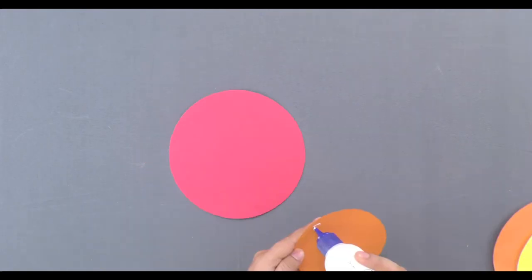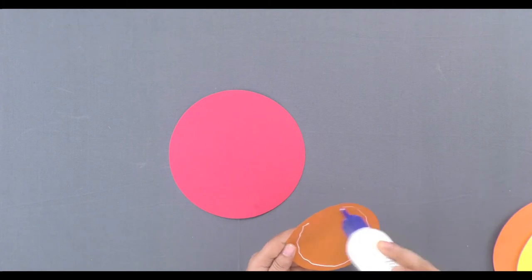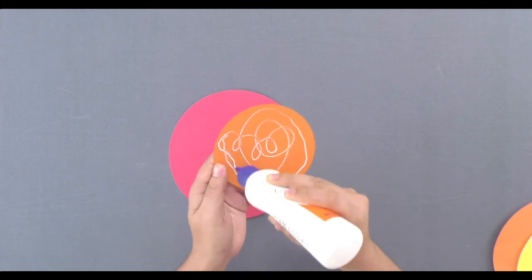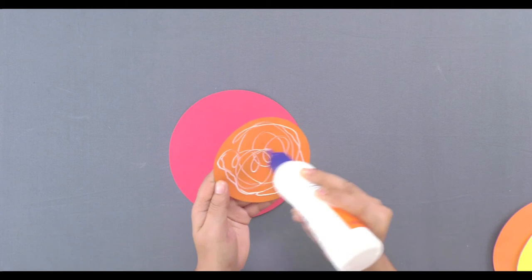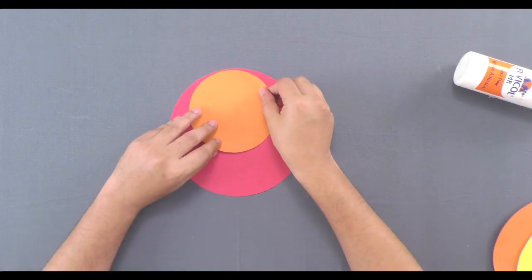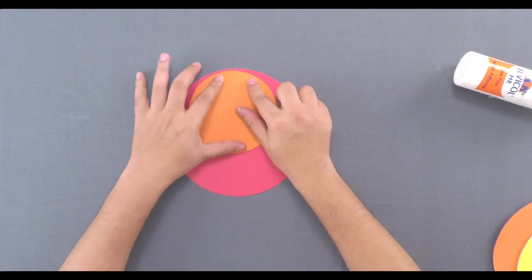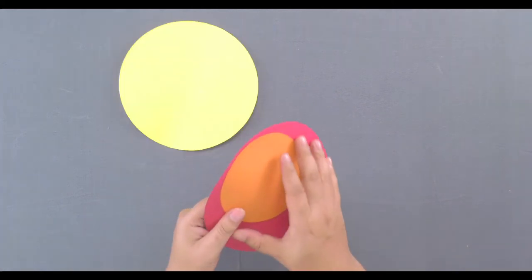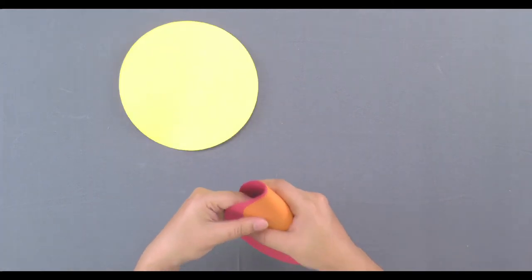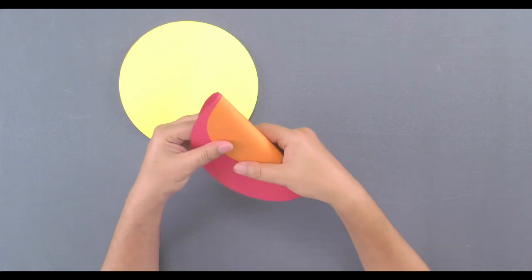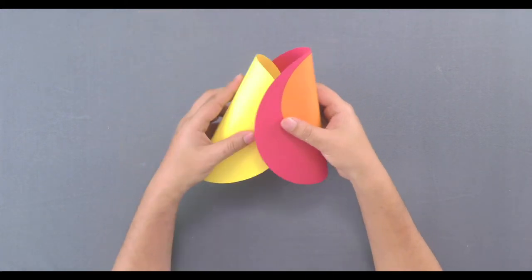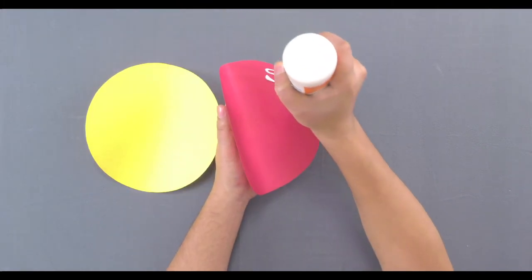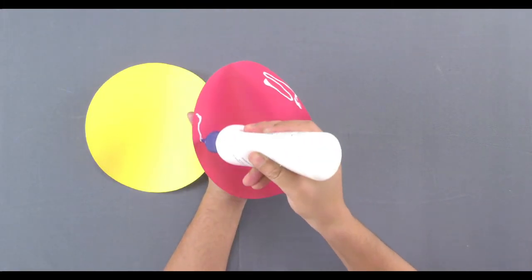Apply some adhesive and paste the smaller circle on one of the larger circles. Now fold this circle into halves and fix it into another different colored folded circle to form a hinge.